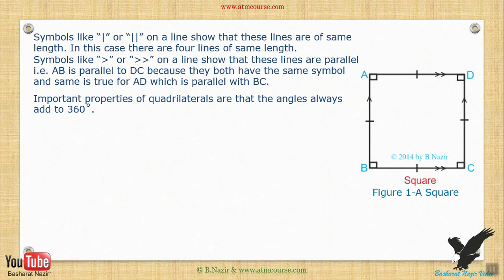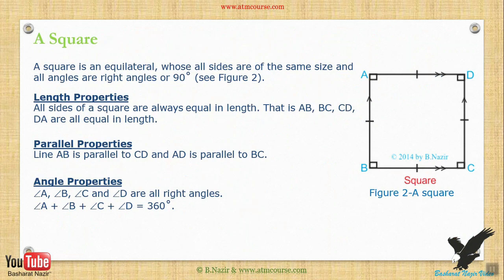An important property of quadrilaterals is that the angles always add to 360 degrees. Properties of a square: a square is an equilateral shape whose all sides are of the same size and all angles are right angles, or 90 degrees. See figure 2. Length properties: all sides of a square are always equal in length — that is, AB, BC, CD, and DA are all equal in length.